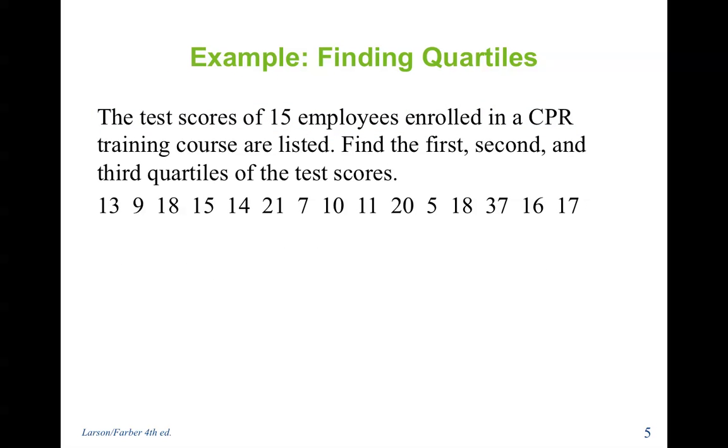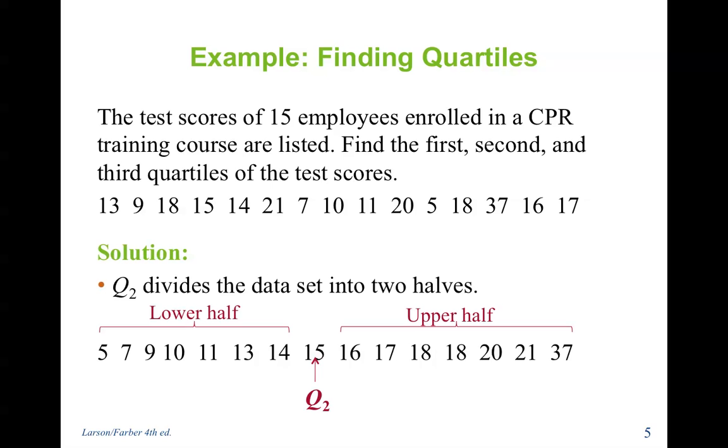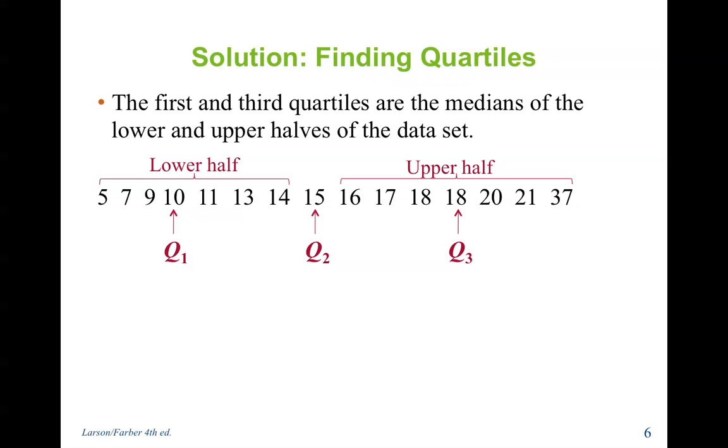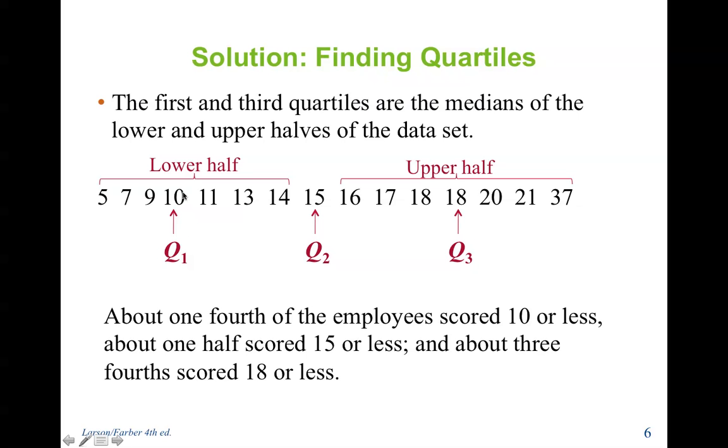For an example, the test scores of 15 employees enrolled in a CPR training course are listed. Find the first, second, and third quartiles of the test scores. First things first, we're going to have to order the data just to find the median. We've already covered finding the median, so I'm not going to cover that again, but the median right here is Q2. That means below the median is the lower half of our data, and above the median is the upper half. If we now want to find Q1 and Q3, we simply find the median of both halves. This is if you want to do it by hand. We are going to use Excel to do this for us.